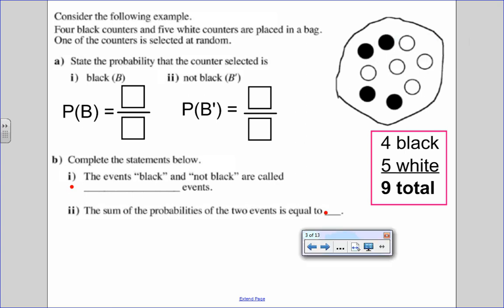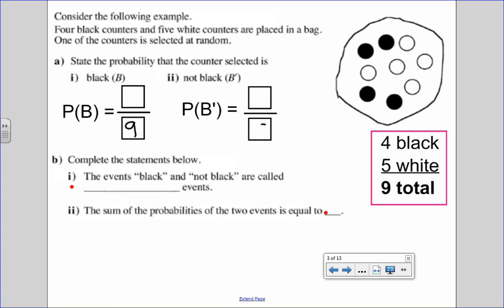So let's look at an example. We have this bag of counters. There's four black and five white counters in a bag. One of the counters is selected at random. So let's look at the probability that I select a counter and it is black. So I can see in here there are four black and five white. There are nine in total.